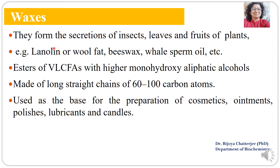Waxes form the secretions of insects, leaves, fruits, and plants. They include lanolin (wool fat), beeswax, and whale sperm oil. Esters of very long chain fatty acids with higher monohydroxy aliphatic alcohols are known as waxes. They are made of very long chains of 60 to 100 carbon atoms and are used in the cosmetic, ointment, polish, lubricant, and candle industries, so they have significant commercial value.